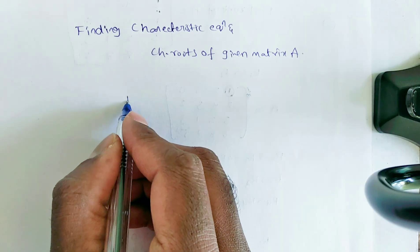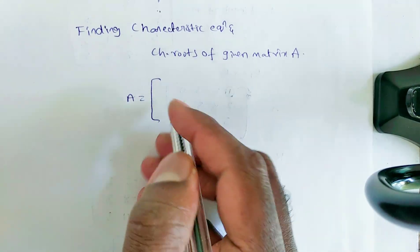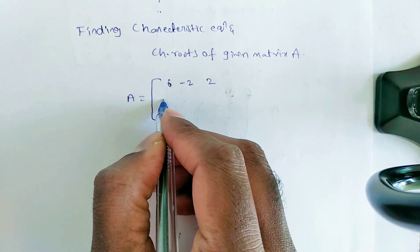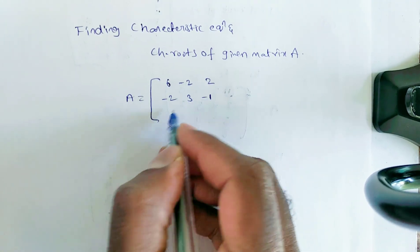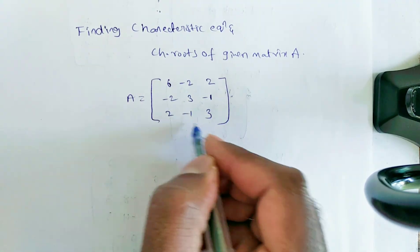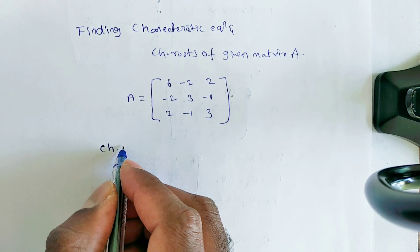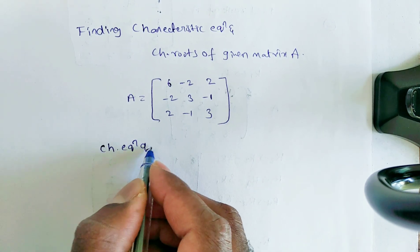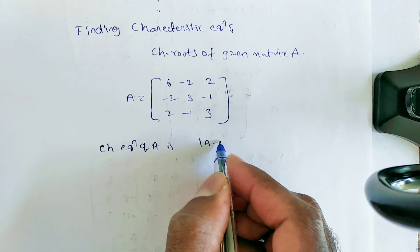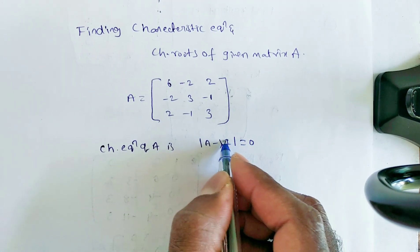Suppose they are given matrix A is equal to: 6, -2, 2 / -2, 3, -1 / 2, -1, 3. We know that the characteristic equation of A is: determinant of (A minus lambda I) is equal to 0.